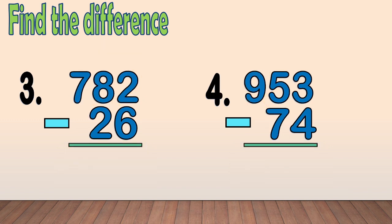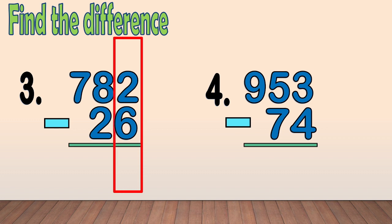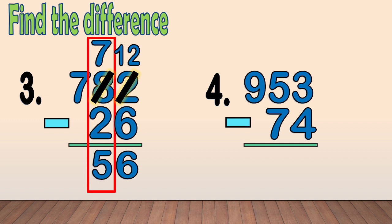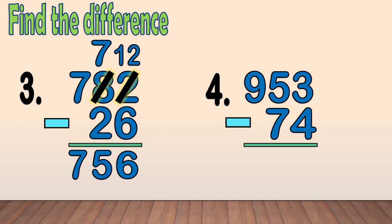Number three: 782 minus 26. First, we subtract the ones: two minus six — we cannot subtract six from two, so we regroup one ten from eight. We have twelve ones. We cross out the two and write twelve at the top. Now we only have seven tens — we cross out the eight and write seven at the top. We subtract the ones: twelve minus six equals six. We subtract the tens: seven minus two equals five. Bring down the hundreds digit seven. Our final answer is 756.